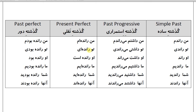Present perfect — گذشته نقلی: Man ranadhe am, To ranadhe i, O ranadhe ast, Ma ranadhe im, Shoma ranadhe id, Anha ranadhe and.